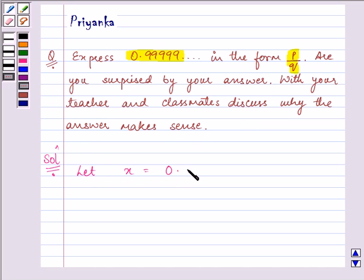Let x be equal to 0.999 and so on, which we can write as 0.9 bar. Multiplying both sides by 10, we have 10x is equal to 9.9 bar.